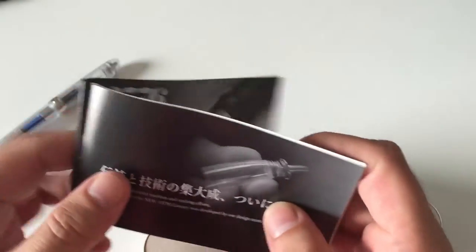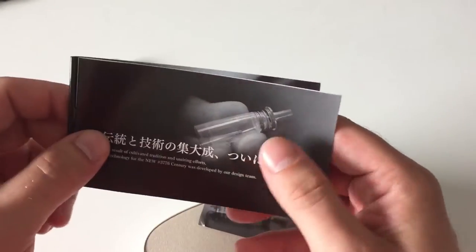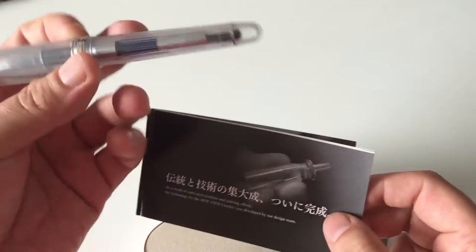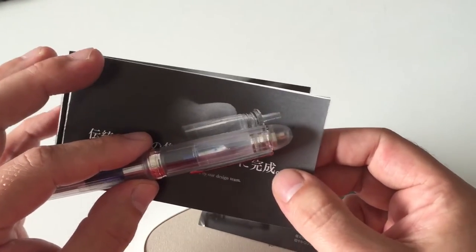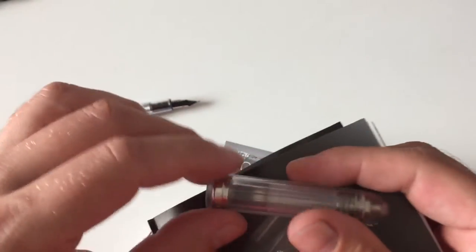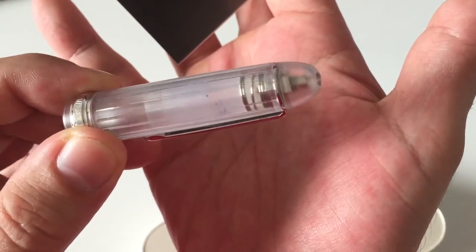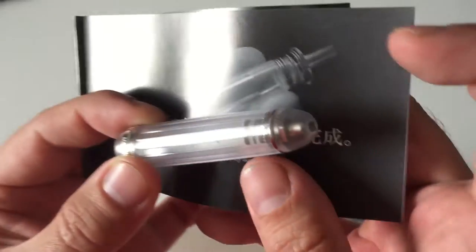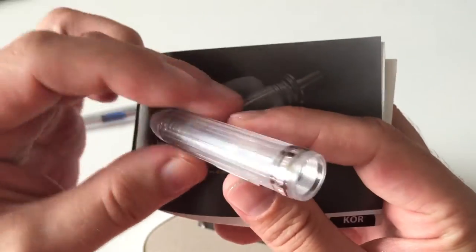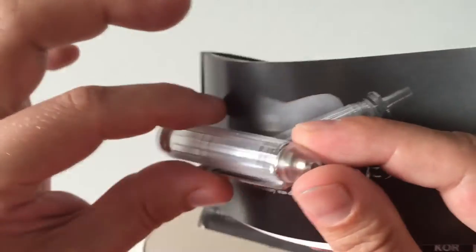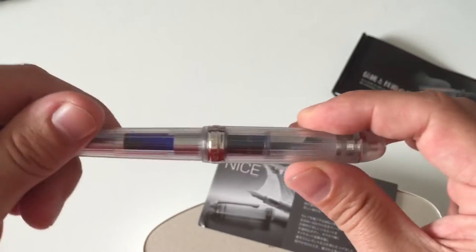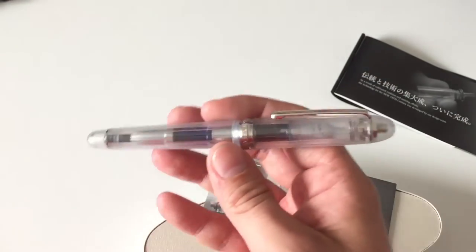One interesting thing I wanted to show you is this inner cap, which Platinum calls the slip and seal mechanism. This pen has been produced before, but they completely redesigned and re-engineered that cap. You see the slip and seal mechanism in the cap, and according to Platinum, it prevents the nib from drying out or the ink from drying. The cap is screwed in here as you can see.